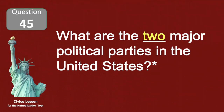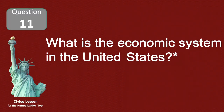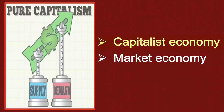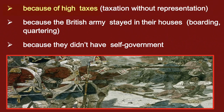What are the two major political parties in the United States? Democratic and Republican. What is the economic system in the United States? Capitalist economy. Why did the colonists fight the British? Because of high taxes.